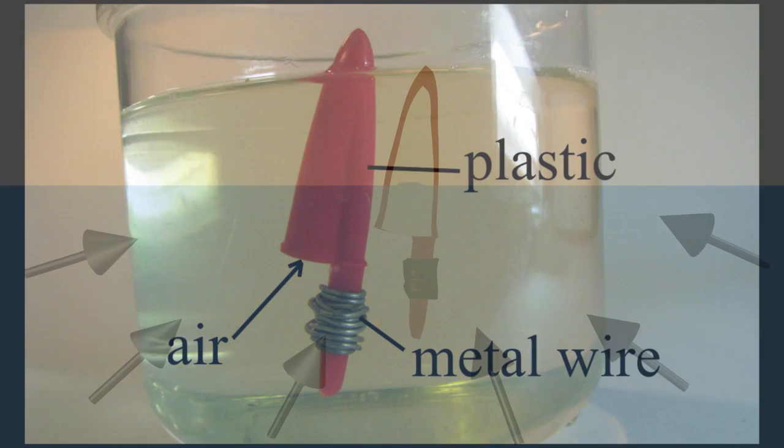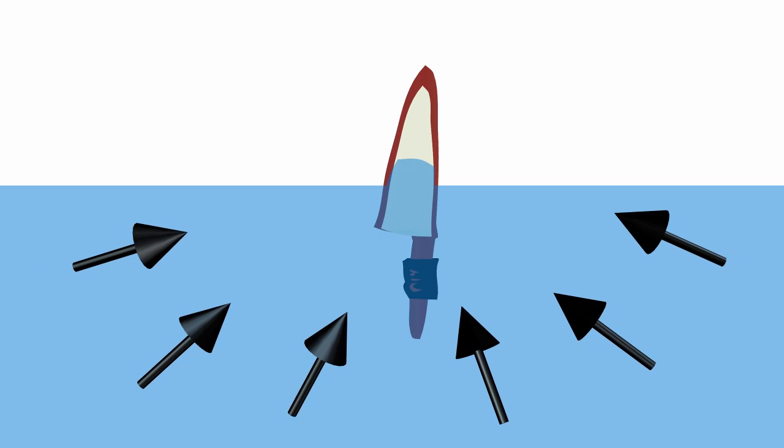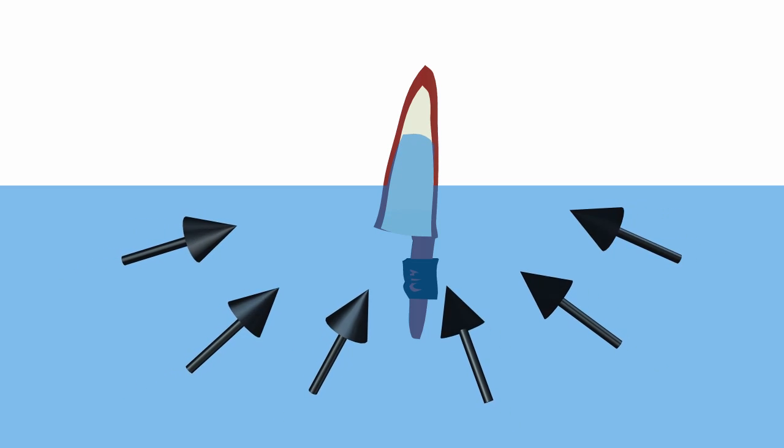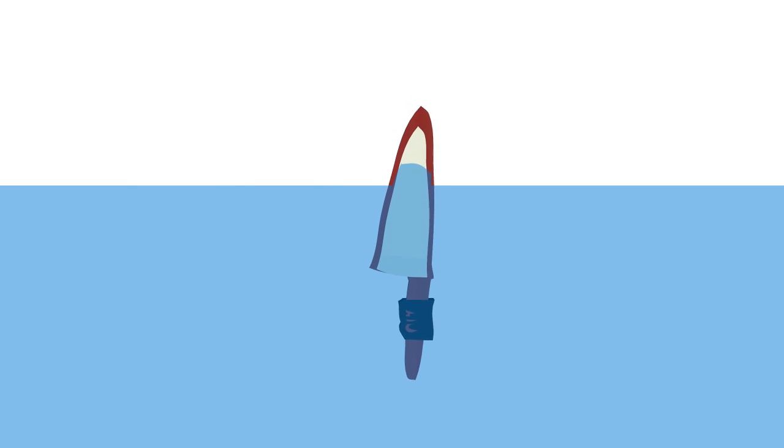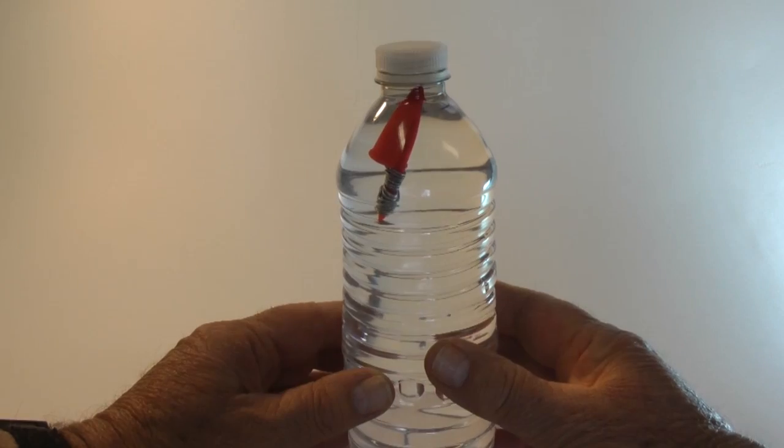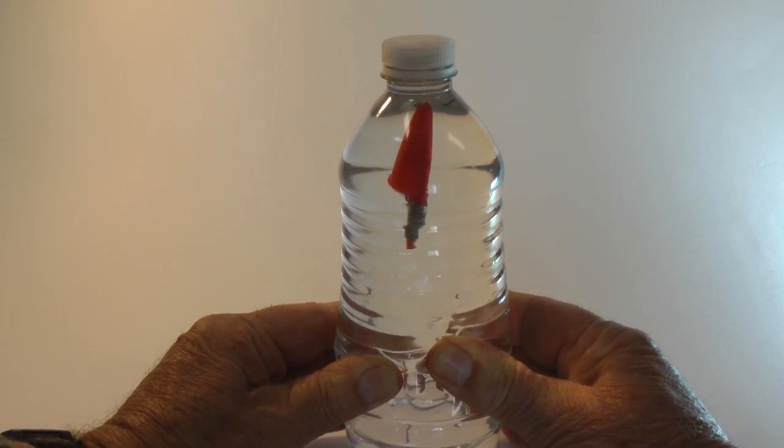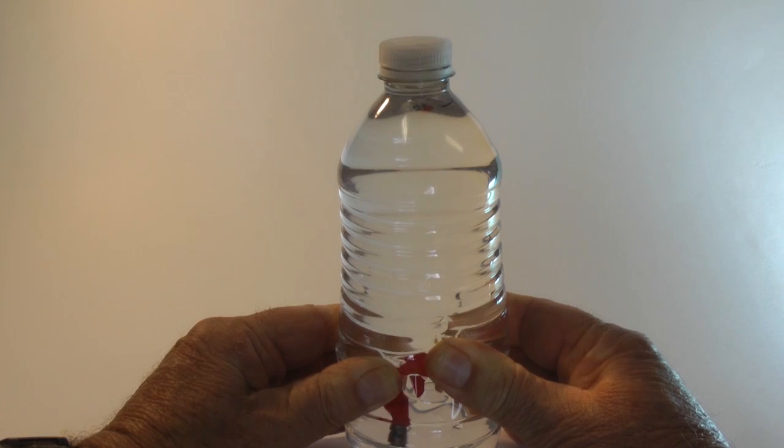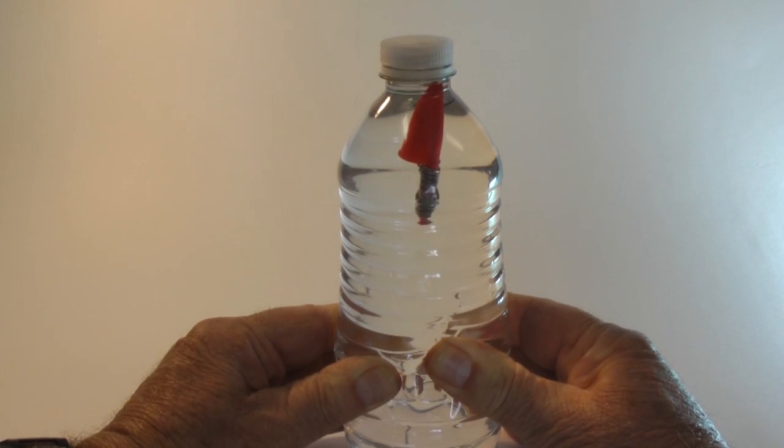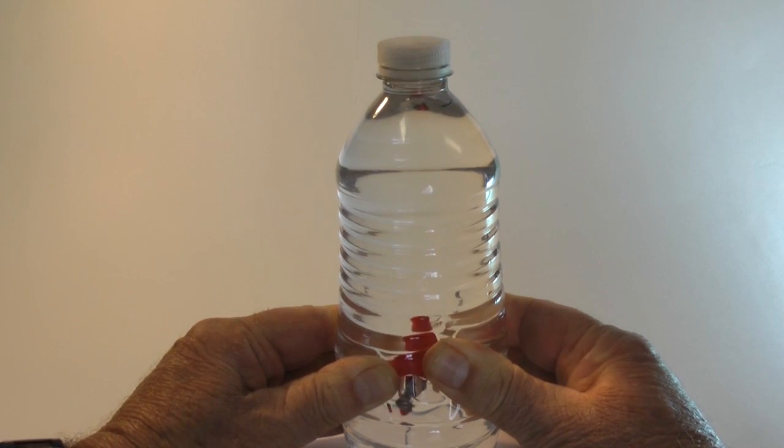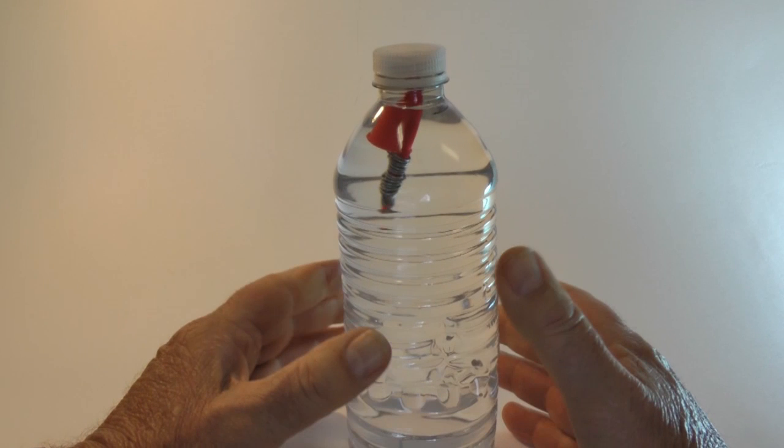When pressure reduces the volume of the air bubble, the total volume of the diver decreases, meaning its density increases. Remember, density equals mass divided by volume. The mass of the diver stays the same, but we can change its volume. Reducing the volume increases density. Increasing volume reduces density. The diver sinks or floats based on its density.